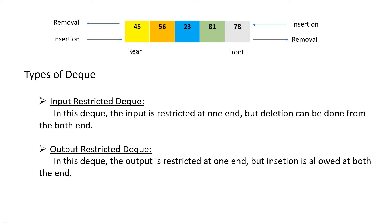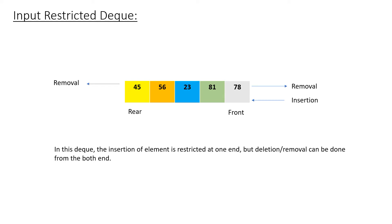Let's understand these two types using a diagram. In the input restricted queue, insertion can happen only at one end — you choose either the front or the rear, but you must select only one end for insertion. The removal or deletion of the element can happen from both ends. This is the input restricted Deque.